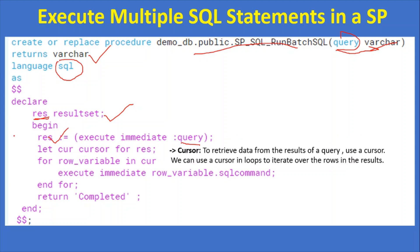Next, we declare a cursor: LET cur CURSOR FOR res. In Snowflake scripting, a cursor is used to retrieve data from the result of a query. So all the data from the RESULTSET is accessible via the cursor. You can use the cursor in a loop to iterate over rows in the result set one by one.